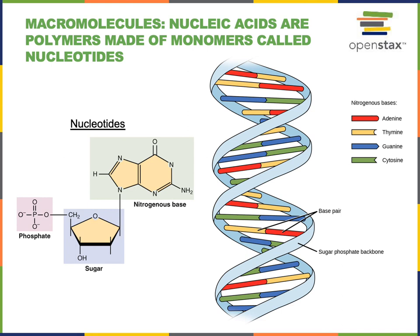The major nucleic acids are DNA and RNA, and one of the major differences between DNA and RNA has to do with the chemical structure of the sugar region of the nucleotide. The ribose sugar is found in the nucleotides of RNA — RNA stands for ribonucleic acid — and the deoxyribose sugar unit is found in DNA, which stands for deoxyribonucleic acid.